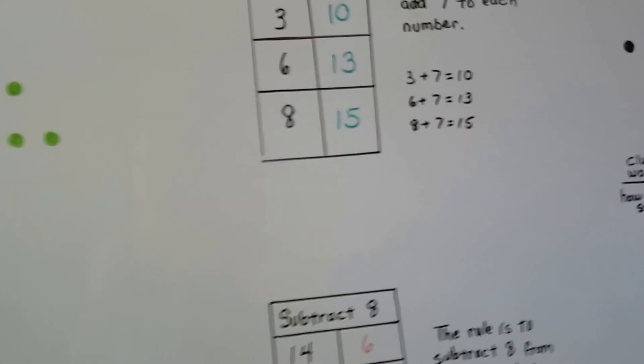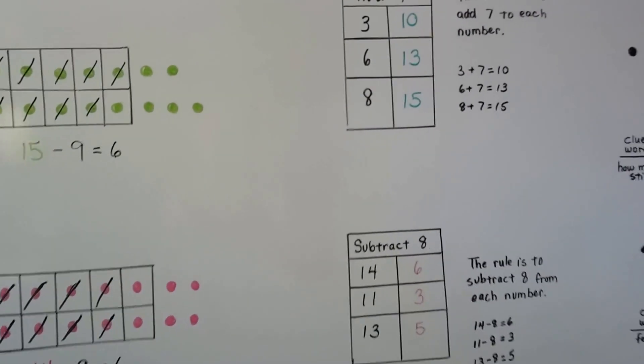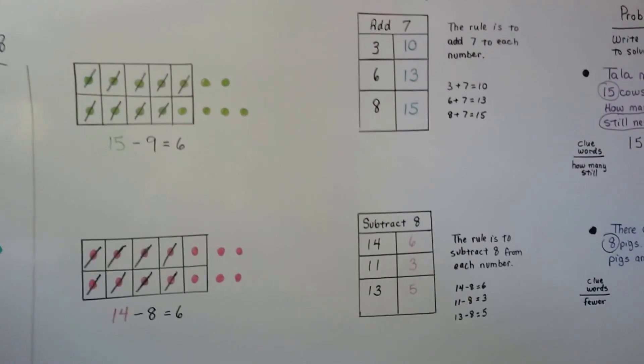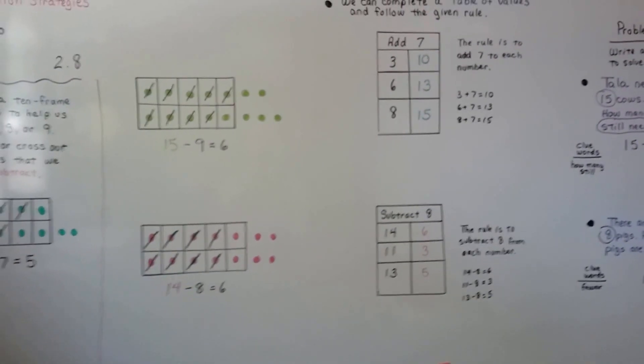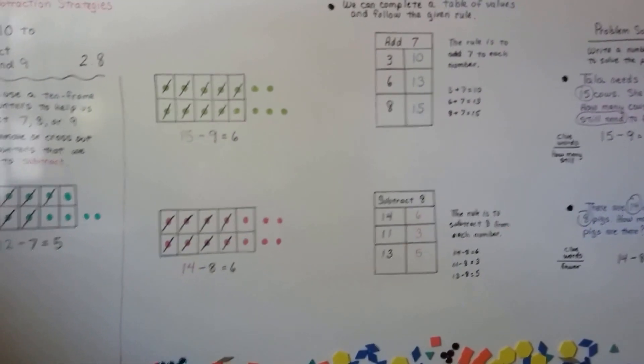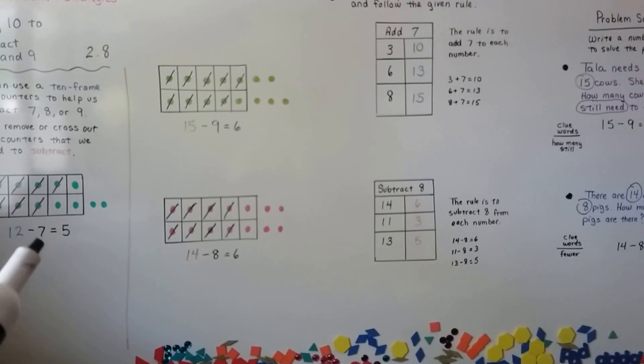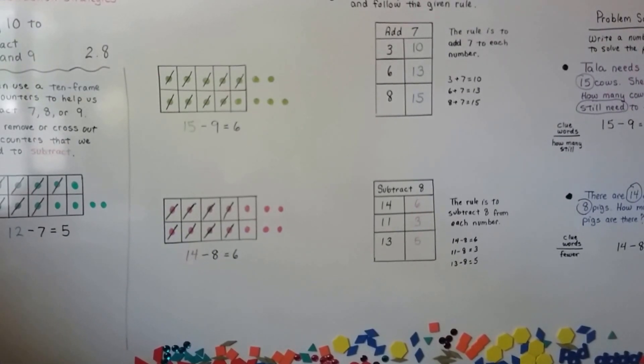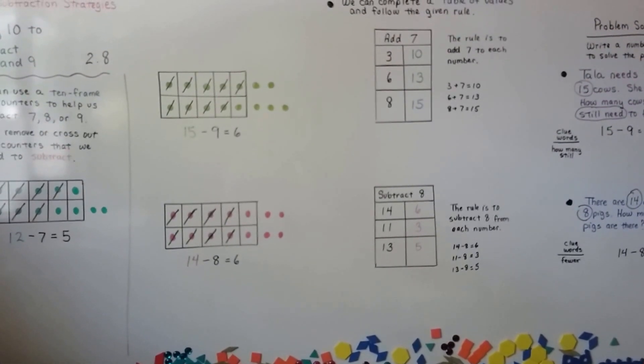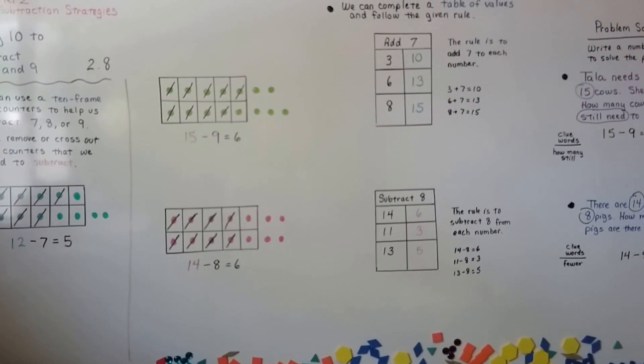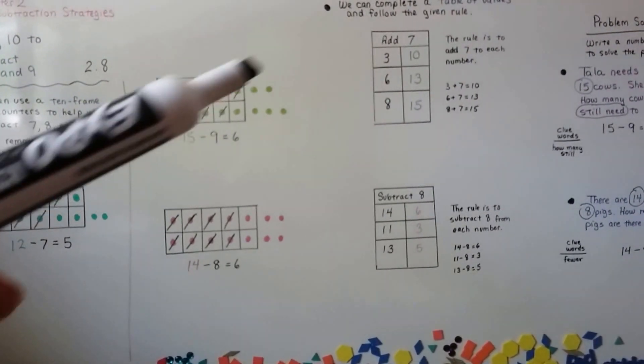We can use a 10 frame to help us subtract 7, 8, and 9. We just remove the counters or cross out the ones that we're counting off. Our subtrahend, that second number here, is our subtrahend. That's the minuend, that's the subtrahend, and that's the difference. We can also complete a table of values by following the rule that's given on top.